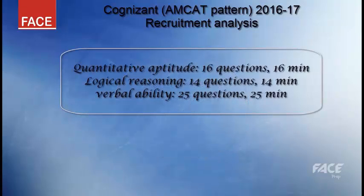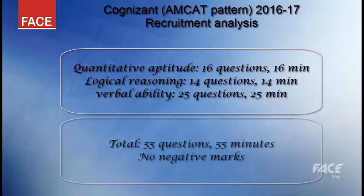The pattern of the aptitude test is: there are three sections — quantitative aptitude, logical reasoning, and verbal ability. Quantitative aptitude has 16 questions to be answered in 16 minutes. Logical reasoning has 14 questions to be answered in 14 minutes. And verbal ability has 25 questions to be answered in 25 minutes. In total, 55 questions for 55 minutes.